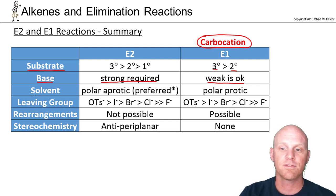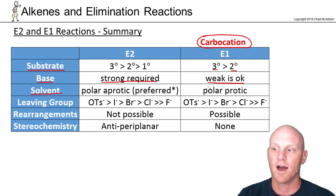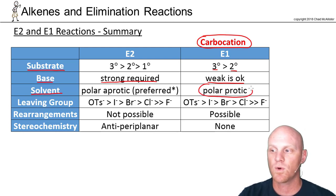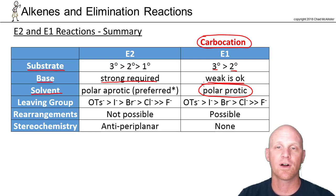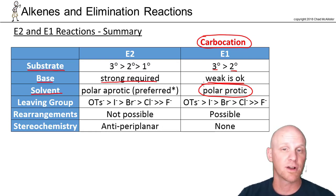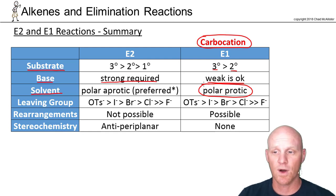Moving on to solvent effects — one thing to note for E1 and SN1: the solvent has to be polar protic. Water and alcohols are by far the most common, and possibly a carboxylic acid as well.